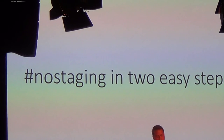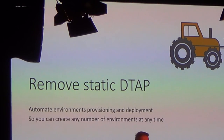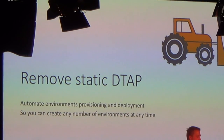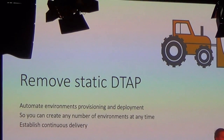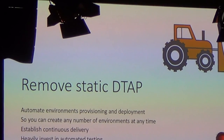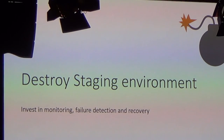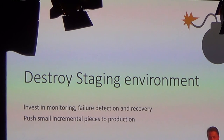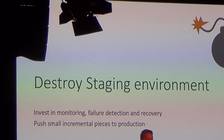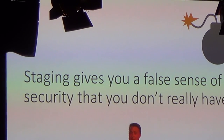So, getting to the end: destaging in two easy steps. First, remove the static detect environments — automate everything, create those environments whenever you need them and destroy them. Establish continuous delivery. Invest heavily in automated testing and build quality into your system. And once you're there, stop using staging environments. Invest in monitoring and disaster recovery. Put really tiny slices of your application changes to production — because really, staging doesn't give you confidence. And if it does, it's fake confidence.